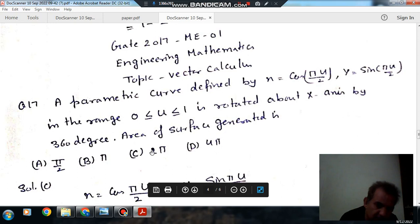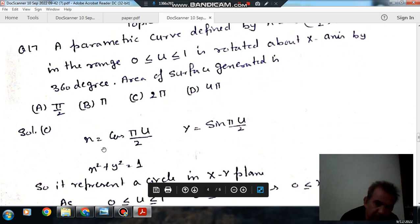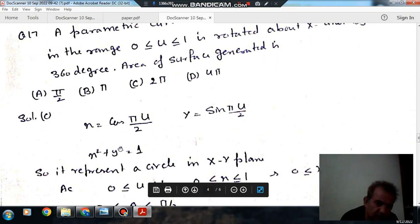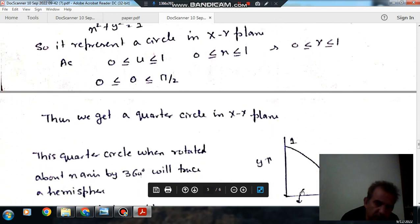...option C 2π, and option D 4π. So as x = cos(πu/2) and y = sin(πu/2), it means x² + y² = 1. This is the equation of a circle with radius 1.